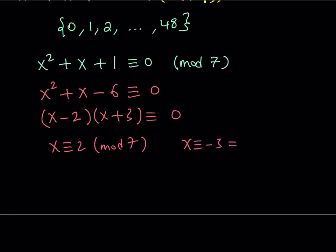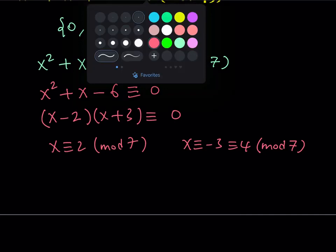So x ≡ 2 (mod 7) or x ≡ -3 ≡ 4 (mod 7) because I'm allowed to add 7 or multiples of 7. So we're getting two solutions from here, but they are mod 7. So what I'd like to do is pick each solution mod 7 and then use it to find the solution in mod 49.